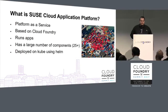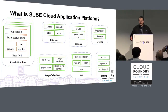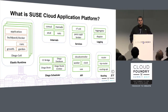So what is it? It's a platform as a service that's based on Cloud Foundry. It runs applications, has a large number of components just like Cloud Foundry does, and it's deployed on Kubernetes using Helm. CAP is made of the exact same stuff as Cloud Foundry — it's actually built from the same sources. This is a view that shows them grouped by their function, and every container in the system is represented by a green box. Same Cloud Foundry that you know and love, just containerized.